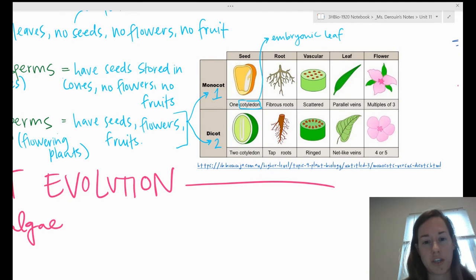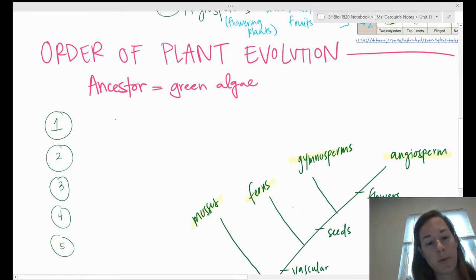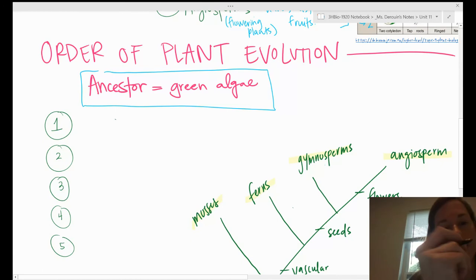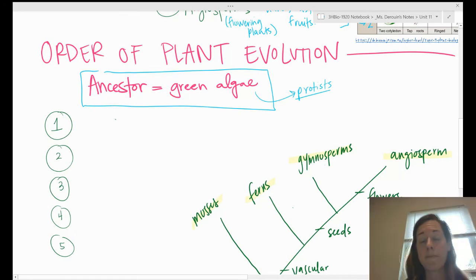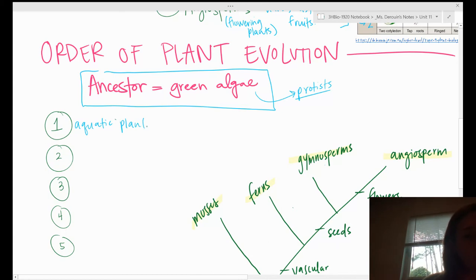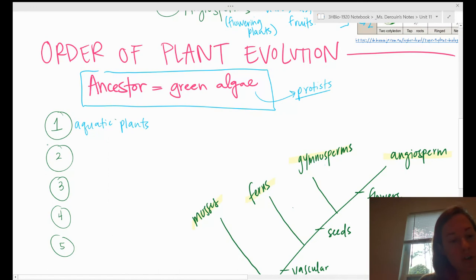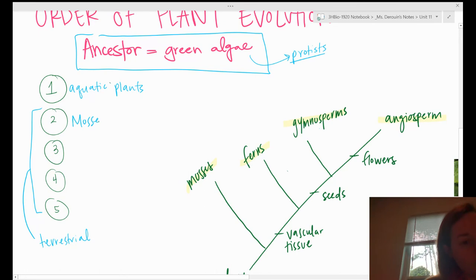Very last thing I want to talk about today is just the order of evolution of plants. We talked about it last week how green algae is the ancestor. Green algae falls under protists because it doesn't fit into the plant category because it's unicellular. But it is the ancestor of all plants. Then, the very first plants to evolve would have been aquatic because we know life began in the ocean. When it comes to the terrestrial plants or the land plants, the first ones are going to be your non-vascular plants, your mosses slash non-vascular.